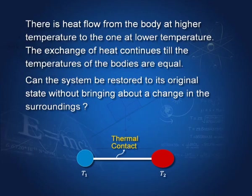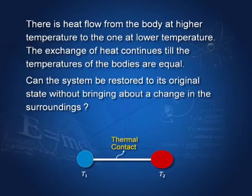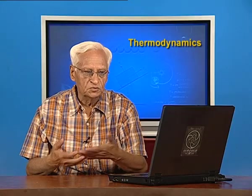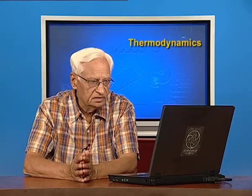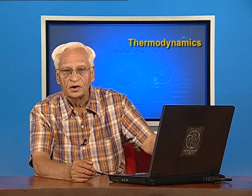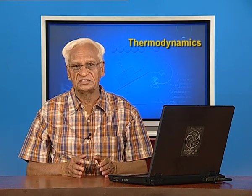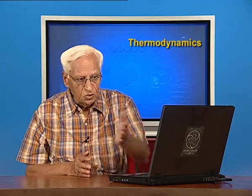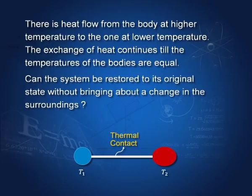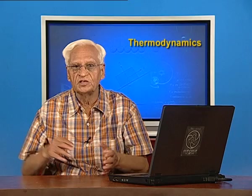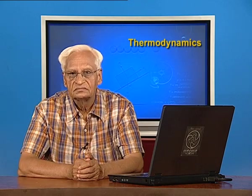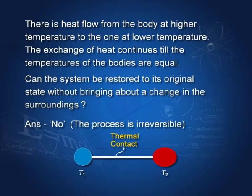Take another example. A body at a higher temperature is in thermal contact with a body at a lower temperature. Heat flows from the higher temperature to the lower temperature, and keeps flowing until both bodies have the same temperature. Once they have acquired the same temperature, it is not possible to recover the original state — transferring energy back without outside help — so this process is also irreversible.